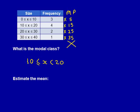So now we've got our midpoints. The next step is to times the frequency by each midpoint. So you write a times in, like I have done here. So here's the times in. The first one is 3 times 5, which is 15.